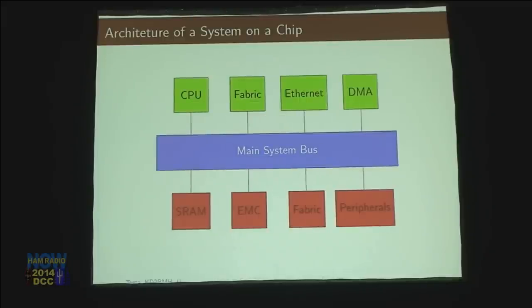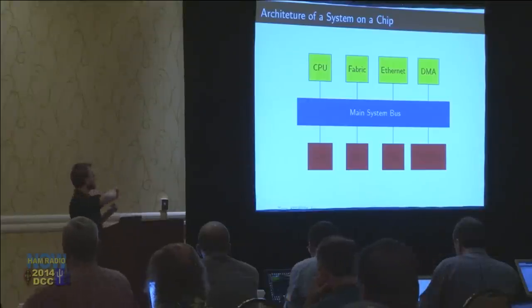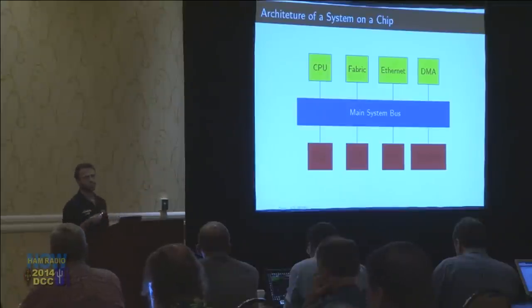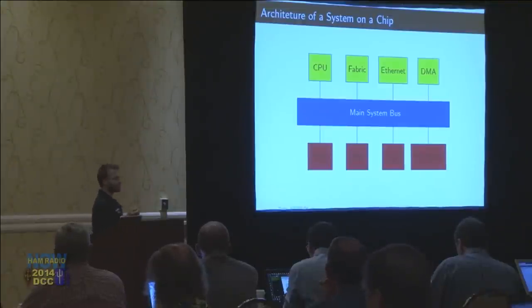The critical thing about a system on a chip is that there's this main thing called the main system bus, or bus matrix. Coming off of this bus matrix there's all of your masters. It's just like if you used I2C or SPI — there's masters and slaves of the bus. The same thing is going on inside of the chip.